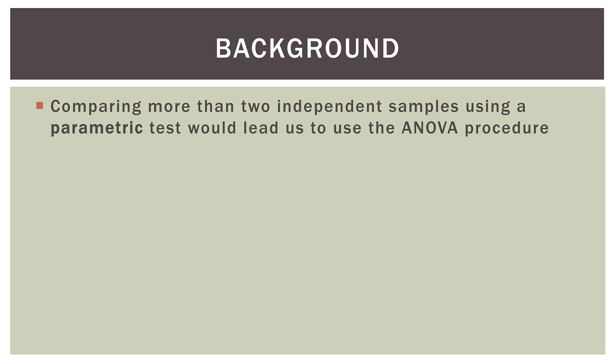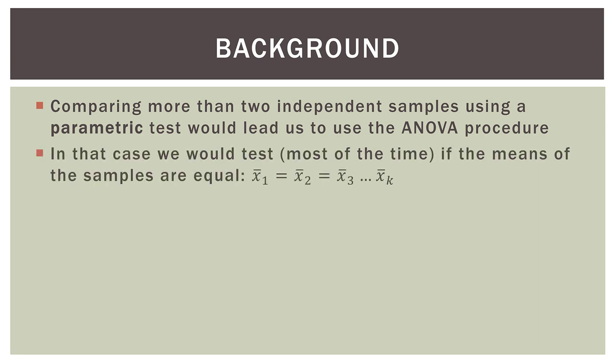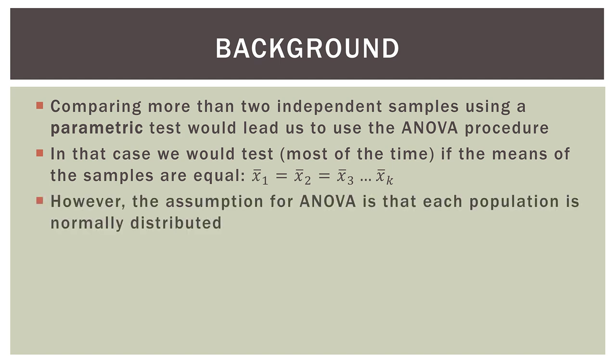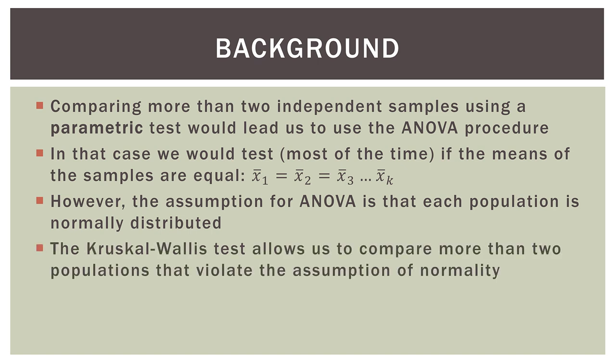So first, a bit of background. Comparing more than two independent samples using a parametric test will lead us to use the ANOVA procedure. In that case, we would test most of the time if the means of the samples are equal. However, the assumption for ANOVA is that each population is normally distributed.